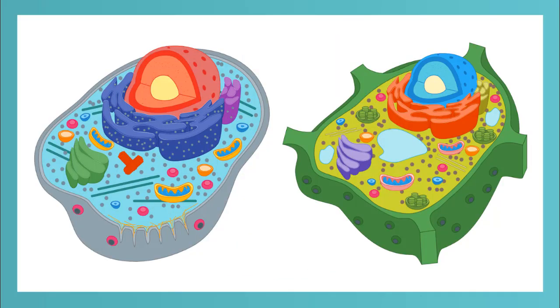The animal cell on the left is very similar to the plant cell on the right, but there are distinct differences between the plant cell and the animal cell. Can you think of any reasons why? That's right. Plants and animals live very different lives.